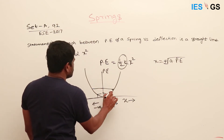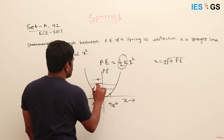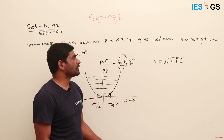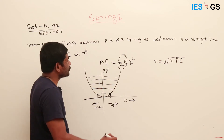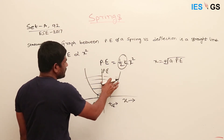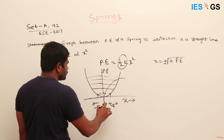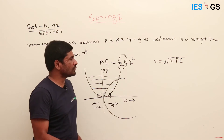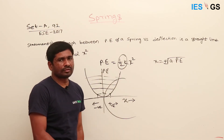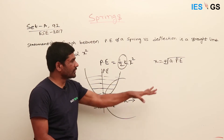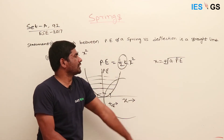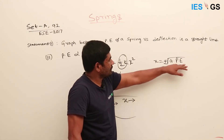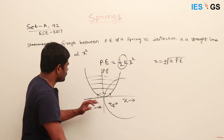This method helps if you're confused about how to draw the parabola correctly — whether it is symmetric about the PE axis. Rewrite the equation in a form that gives plus or minus square root of something, so the symmetry becomes clear.